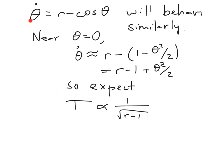The original thing we cared about was theta dot equals r minus cosine theta, and it's going to behave pretty similarly. Let's look at that. So it has a parabolic shape near theta equals 0, and I'm just going to do a little bit of a Taylor expansion right there, taking the first two terms.